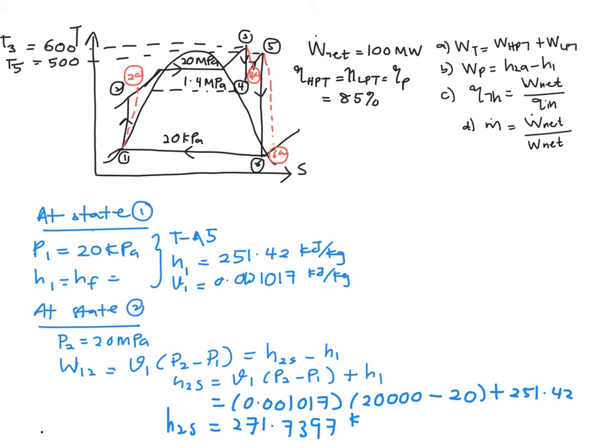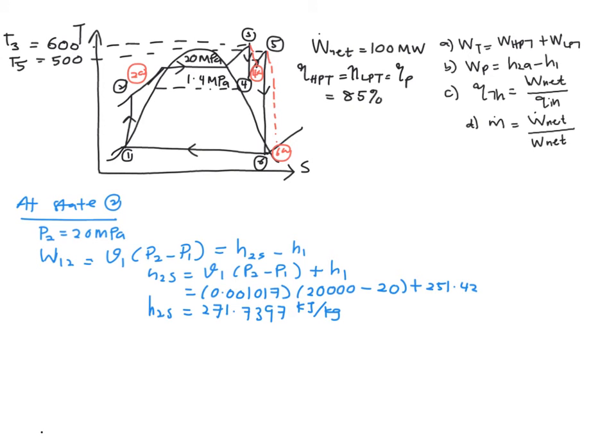Alright, in this state 2 you are given the isentropic efficiency of your pump which is 85%, therefore you will need to find your actual value of 2, where the definitions of your isentropic efficiency of your pump is work of isentropic divided by work actual, which is equal to (H2s - H1) over (H2a - H1), which is equal to 0.85.